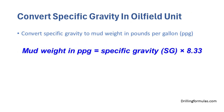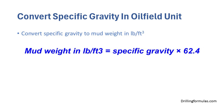Convert specific gravity to mud weight in pounds per gallon using this formula: mud weight in pounds per gallon equals specific gravity multiplied by 8.33. To convert to mud weight in pound per square foot, mud weight in pound per square foot equals specific gravity multiplied by 62.4.